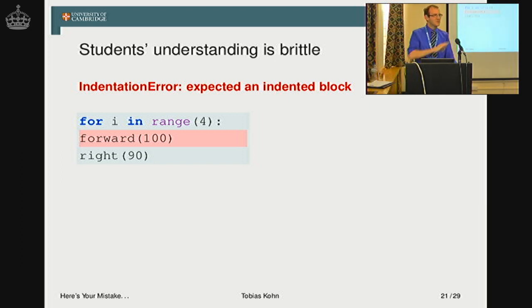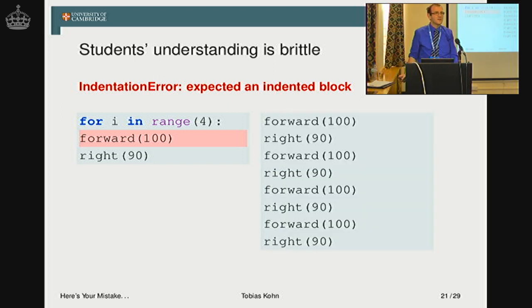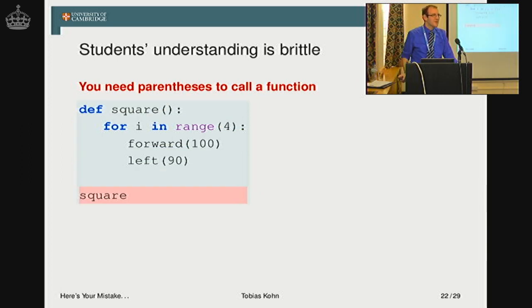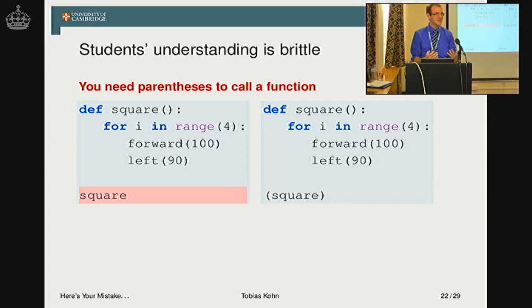Another example: since I'm using lots of turtle graphics in my beginners' classes, you'll see that here. You have to indent the block, and of course we've talked about that time and again — so that should be clear what to do. But here's the student's answer. It solves the problem, kind of. My favourite one: my environment tells you you need parentheses to call the function, and here's the student's solution. That's just a single case — not all students do that. But it shows that even if you try very hard to give explicit error messages, that doesn't really mean students know how to correct their code.